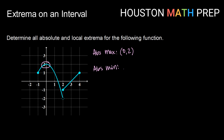For an absolute minimum — the smallest y value that is achieved — it would be here at (2, −2). But since we have an open circle, we do not ever actually reach negative 2. We get infinitesimally close to negative 2, but never actually there, which means we do not achieve an absolute minimum for this function.